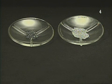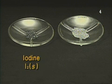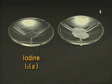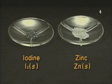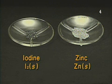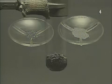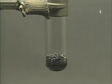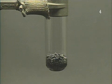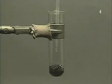The solid on the left is elemental iodine; on the right is zinc metal. The test tube contains a mixture of solid iodine in excess and finely divided zinc metal. A small quantity of water is added to provide good mechanical contact between the zinc and the iodine.